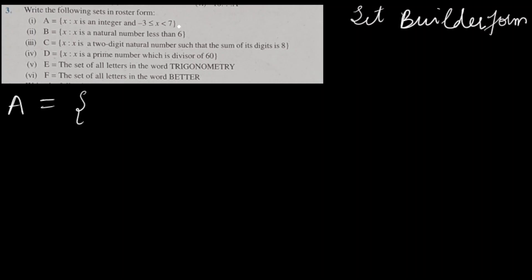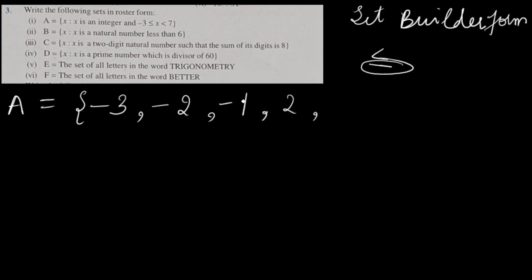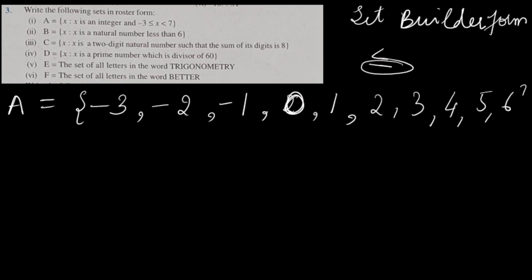In roster form, we only write the elements. Since X ≥ -3, equality is also there, so we start from -3: then -2, -1, 0, 1, 2, 3, 4, 5, and 6 — because X < 7, so 7 is not included since equality is not there. So we write all these elements because it's roster form.